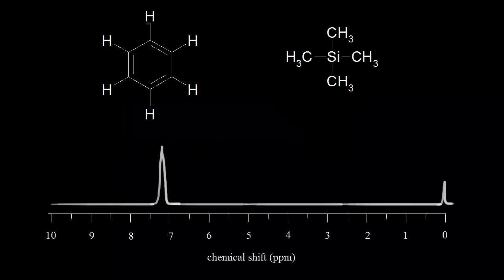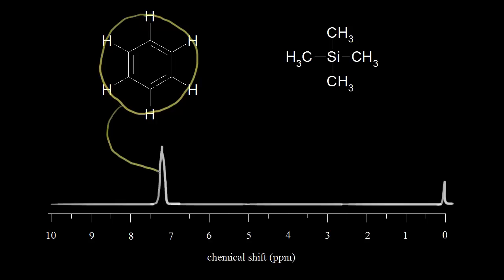In the previous video, we looked at the protons on benzene. We said all six protons were in the same environment. Therefore, all six protons are chemically equivalent and should give us only one signal on an NMR spectrum. And here's that one signal on the spectrum due to the protons on benzene.